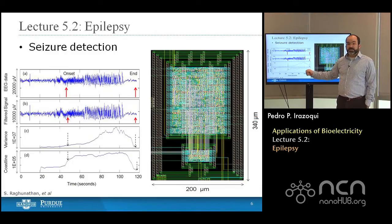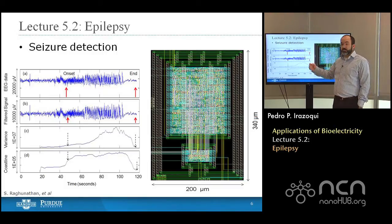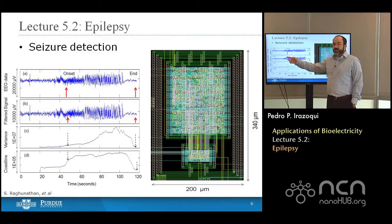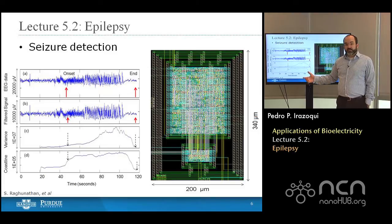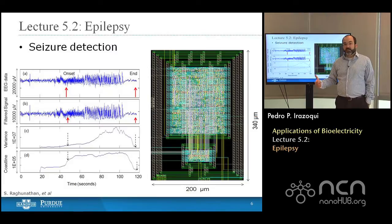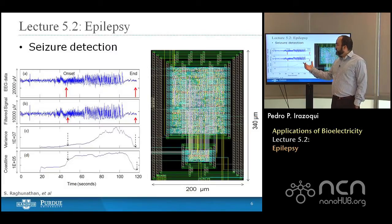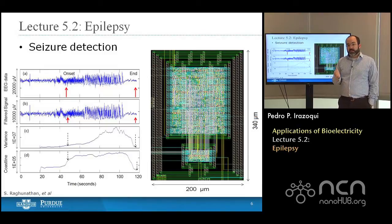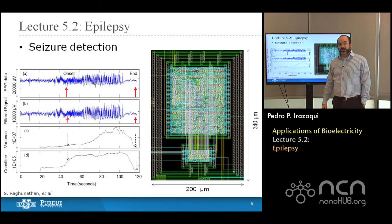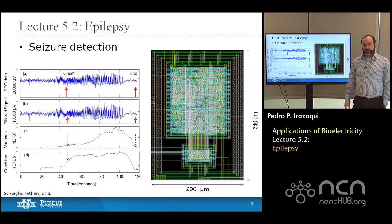Missing a seizure is called a false negative — you say there's no seizure but in fact there is one, so we want to avoid false negatives. But you also don't want to detect things that aren't seizures and say that they are — that would be a false positive. If you're developing a device that will electrically stimulate only when a seizure is about to occur so you're not altering brain behavior otherwise, you want to reduce false positives as well. So you have to come up with algorithms that achieve both false positive and false negative reduction.